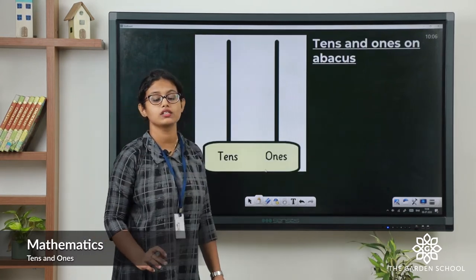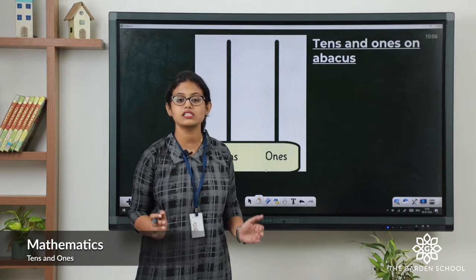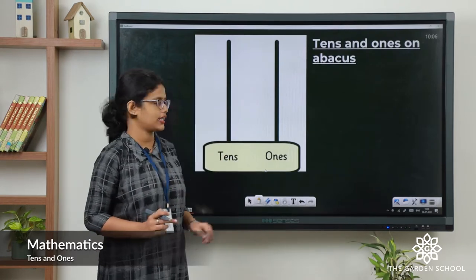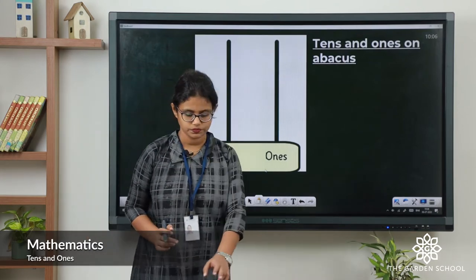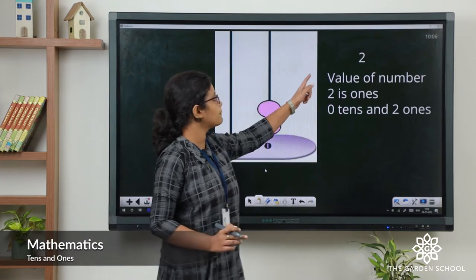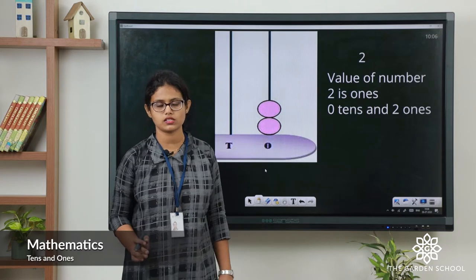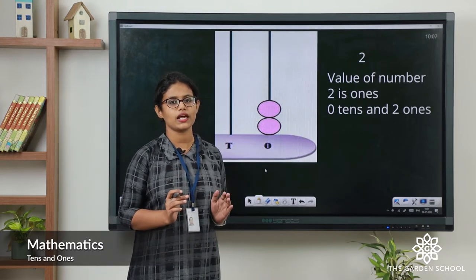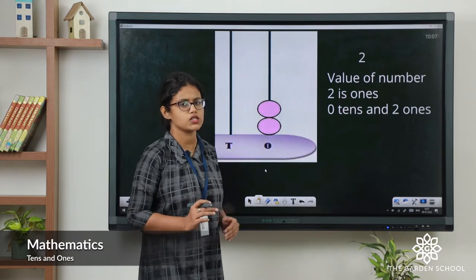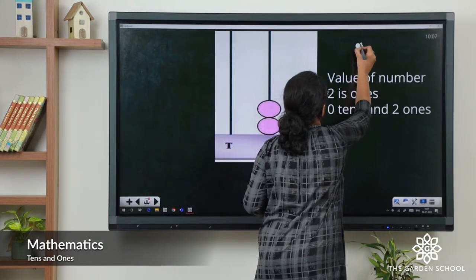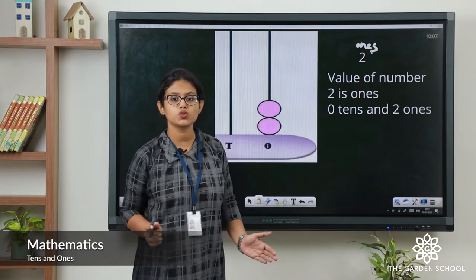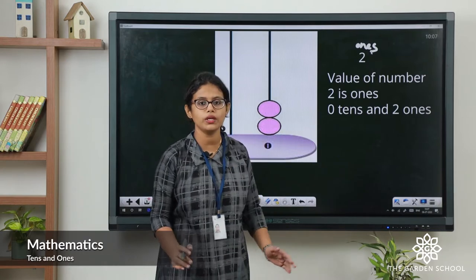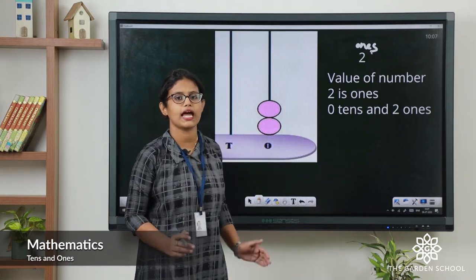Now let's see tens and ones on the Abacus. You know what is an Abacus? An Abacus is a tool which we use for reading numbers. In this Abacus there are 2 rods — the ones and the tens. Let's take the number 2 and represent it on the Abacus. 2 is a one-digit number. We always calculate place value from the right, from the ones place. So the place value of 2 is ones. In ones place we will draw 2 beads. That makes number 2.